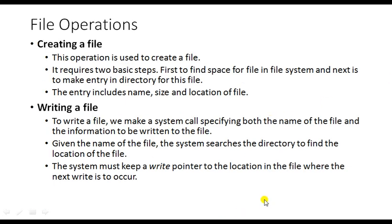File operations are the tasks you perform on a file. In general, file operations include creating a file, writing a file, opening a file, and updating a file. For example, you open an application, write something — that is writing the file — and save it, which is also one type of creating. We will now understand what happens internally in the operating system when you create, write, or open a file.